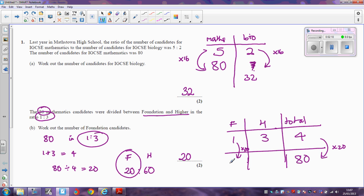So to get the same ratio here, we're going to multiply by 20 to get the number of foundations, that's 20. Multiply here to get the number of higher, so 3 times 20 is 60. So 1, 3, 4 gives us the same as 20, 60, 80.